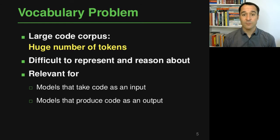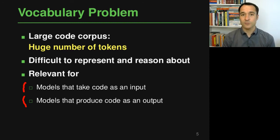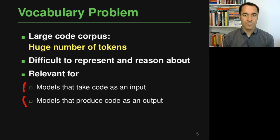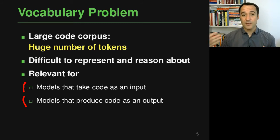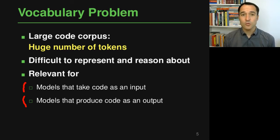This vocabulary problem is relevant for two kinds of models: models that take code as an input and models that produce code as an output. If you think of a model that takes code as an input — say, a model that reasons about a piece of code and tries to determine whether it is buggy or not — then somehow this model needs to take all this code in, and the large vocabulary causes representation and reasoning problems on the input side. On the output side we also have a problem: if the model tries to produce code — for example, by providing code completion — it must predict one out of many many different tokens each time, and that is inherently challenging because if you have many options to choose from, it's much more difficult to choose than if you had just a few.